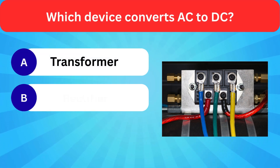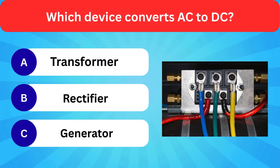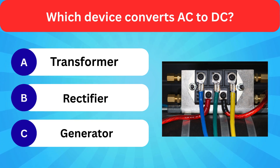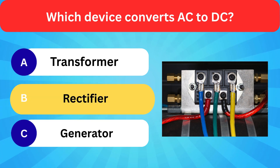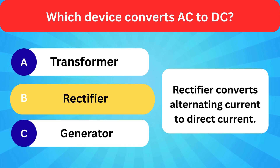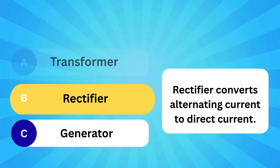Which device converts AC to DC? Options: Transformer, Rectifier, Generator. Correct answer is rectifier. Rectifier converts alternating current to direct current.